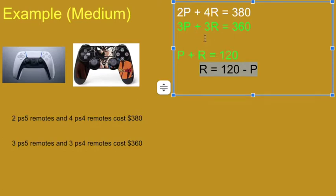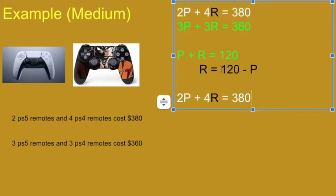Now, I was using the green formula to do this isolation, so I don't want to substitute back into the green formula. That's going to cause problems. I'm going to substitute into the white formula. So I haven't used this yet. And I'm going to replace R with 120 minus P.